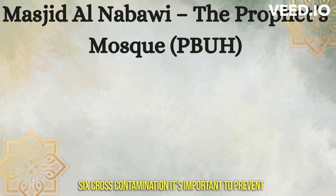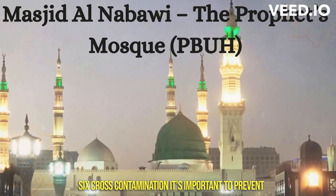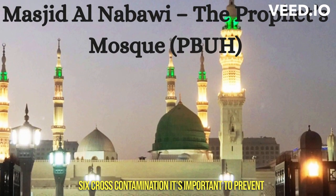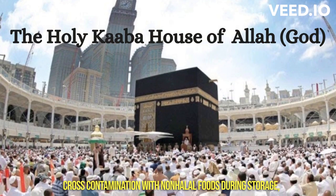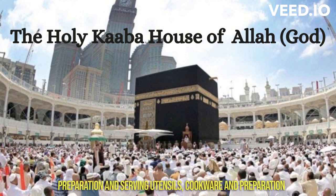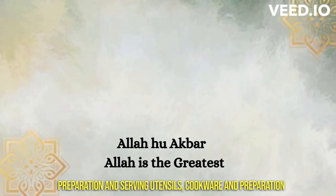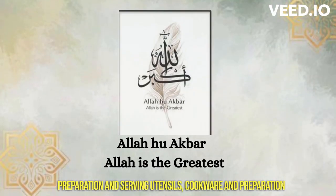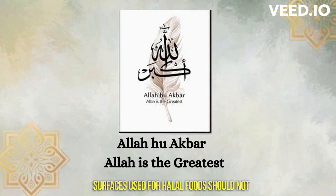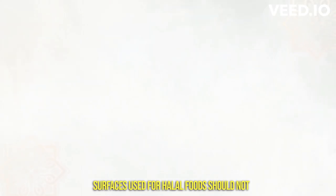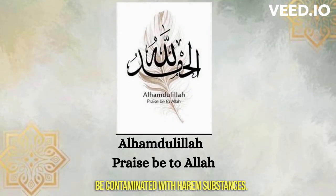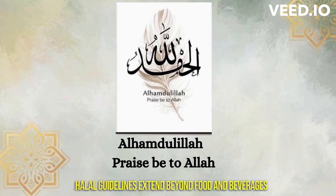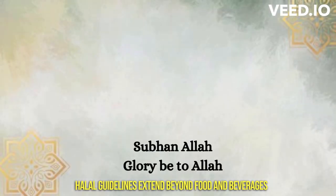6. Cross-contamination — it's important to prevent cross-contamination with non-halal foods during storage, preparation, and serving. Utensils, cookware, and preparation surfaces used for halal foods should not be contaminated with haram substances.